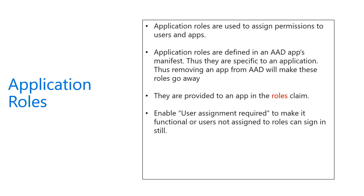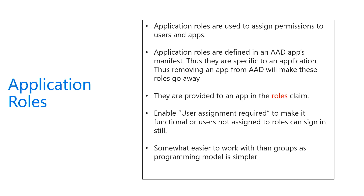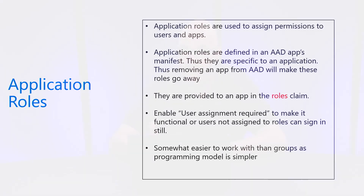If you allow your app to use any user, you don't force the administrator to assign roles to those users when assigning users to your application. Best practice is to flip that switch to make sure that you are requiring assigning users to your application as an administrator. Roles are a bit easier to use than groups, because you can hard-code role names — for example, admin, regular user, or an approval role — something you can define in the application and hard-code in your code.